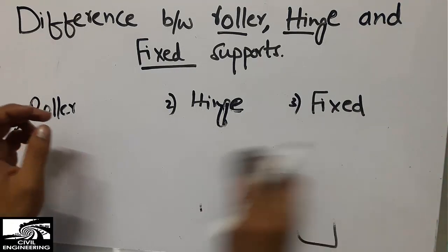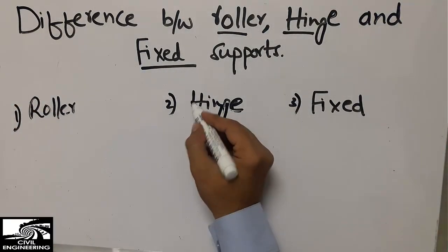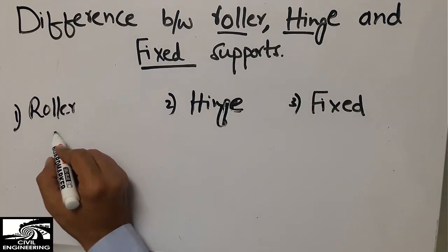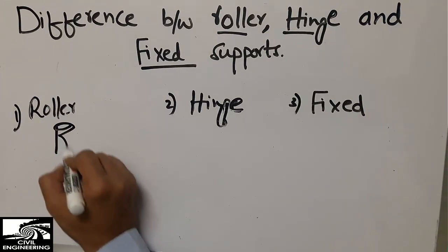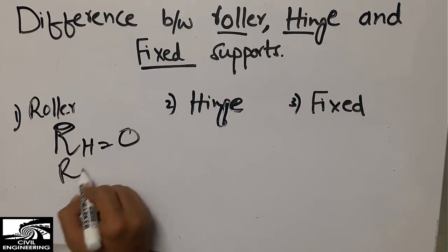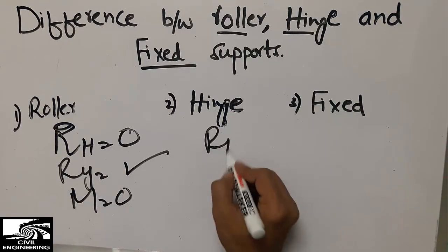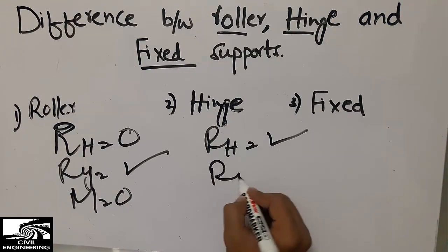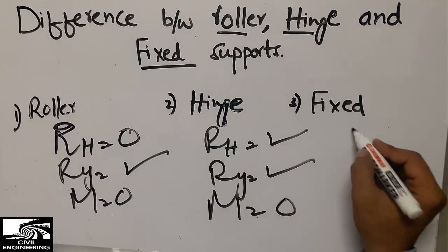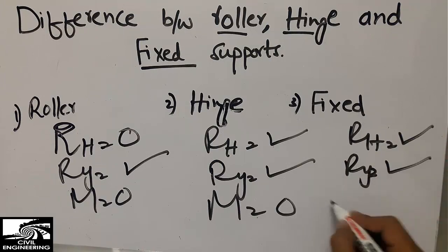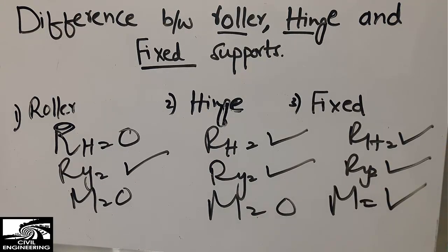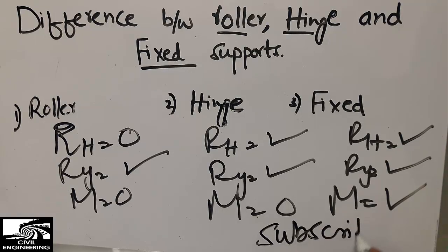To summarize: for the roller support, only vertical reaction Ry is present — horizontal is zero and moment is zero. For the hinge support, horizontal Rx and vertical Ry are present — but moment is zero. For the fixed support, horizontal, vertical, and moment are all present. Please comment any questions and subscribe to our channel for more civil engineering videos. Thank you for watching.